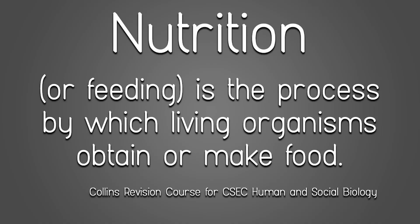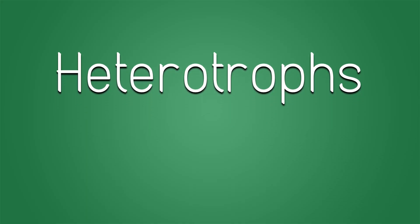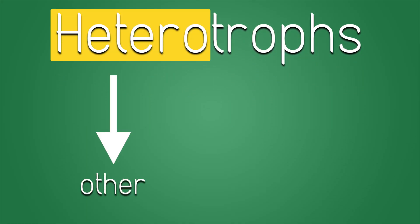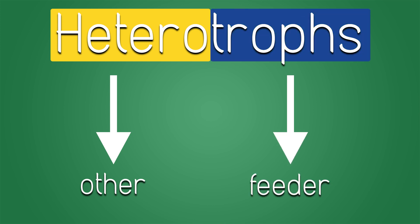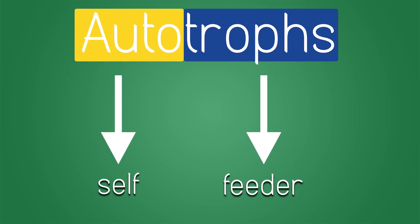The next characteristic of living things is Nutrition. Nutrition is the process by which living organisms obtain or make food. Animals take in food and are called heterotrophs — the prefix hetero meaning other or different, and troph having to do with feeding — so animals require food from external sources. Plants, on the other hand, make their own food via photosynthesis and are called autotrophs, with the prefix auto meaning self.